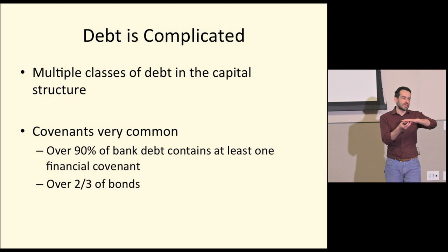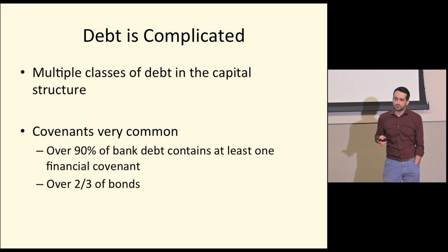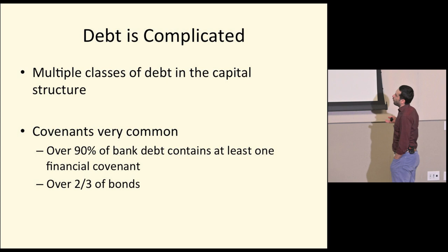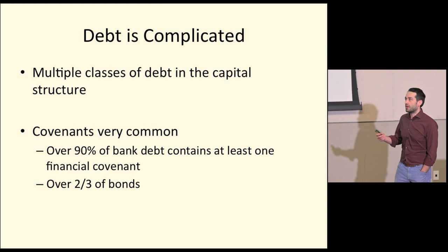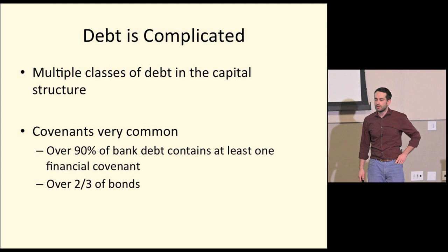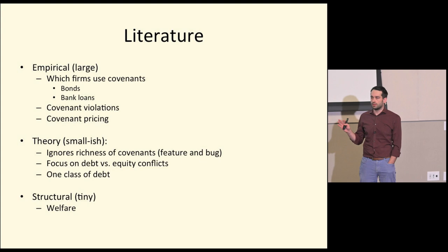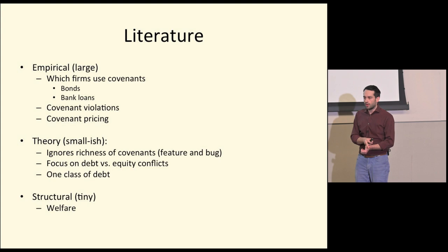These qualifications we call covenants, and they're quite common — they probably matter. If you look at bank debt, over 90% contains at least one financial covenant. Other standard covenants are there too — over two-thirds of bonds have covenants. The empirical literature on this has been enormous over the last 15 to 20 years. We know which firms issue which covenants.